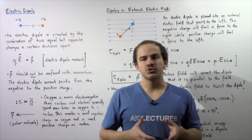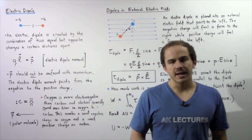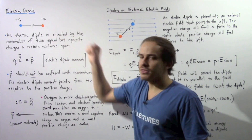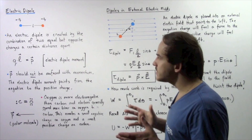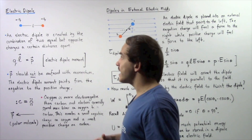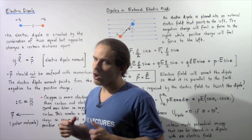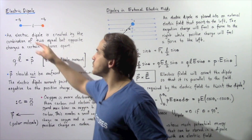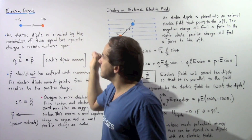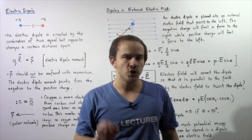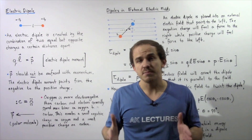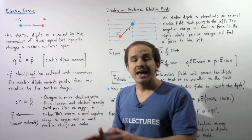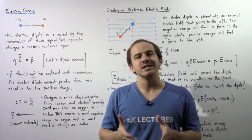Whenever there's a separation of electric charge, there exists an electric dipole. Let's see exactly what that means by looking at this diagram. Suppose we have two electric charges that have equal quantity of charge but are opposite in signs: a negatively charged point charge given by negative Q and a positive charge given by positive Q. These charges are separated by a distance given by lowercase l. In such a case, an electric dipole will exist.